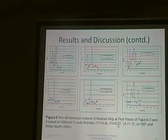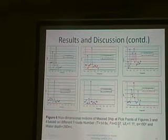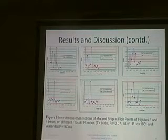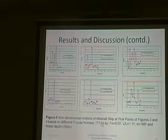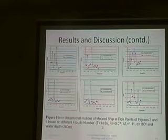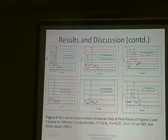Froude number 0.7 or 0.6, for which the motion was significant. And wave period 14.6 seconds, for which the motion of the moored ship was significant.